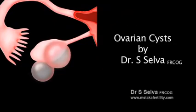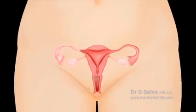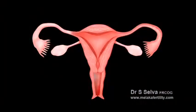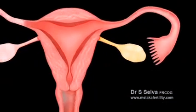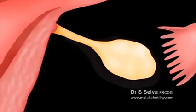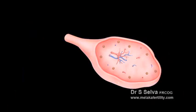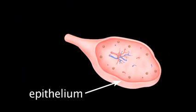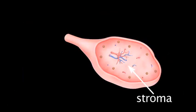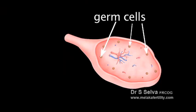Ovarian cysts. This is a diagrammatic representation of a female genital tract. This is the right ovary and this is the left ovary. The ovary consists of several parts. The covering is called the epithelium. The central part is called the stroma, and there are cells in the centre called the germ cells, which produce the eggs.